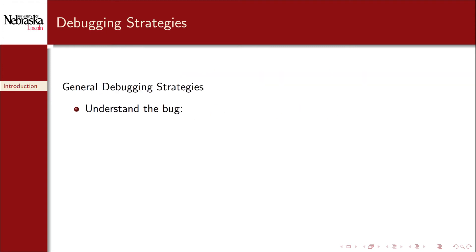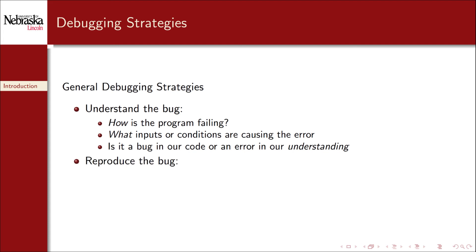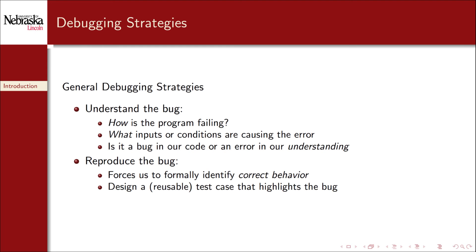There are no hard and fast rules about debugging, but there are some general strategies and best practices that you can follow to make the process easier. The first step is to understand the bug — you need to identify how the program is failing, what the inputs or conditions are that are causing the error, and whether it's in fact a bug in your code or an error in your understanding of the problem or solution. The next step is to reproduce the bug. Doing so forces us to formally identify correct behavior: the program should act in one way, but it's actually acting in a different way. This means we can design a reusable test case that demonstrates the bug, and it gives us something to work with to actually identify the problem.